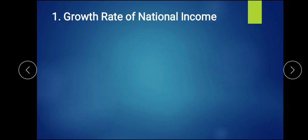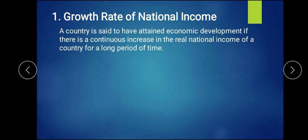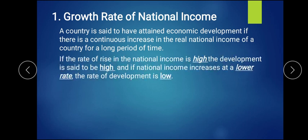Let us start with the first indicator — growth rate of national income. If there is a continuous increase in real national income of a country for a longer period of time, then only we can say that country attains economic development. For example, India is a developing country. If there is a continuous increase in all sectors — agriculture, industry, or service sector — this gives rise to national income, and that national income gives rise to the growth rate of the economy, allowing a country to move from developing to developed.